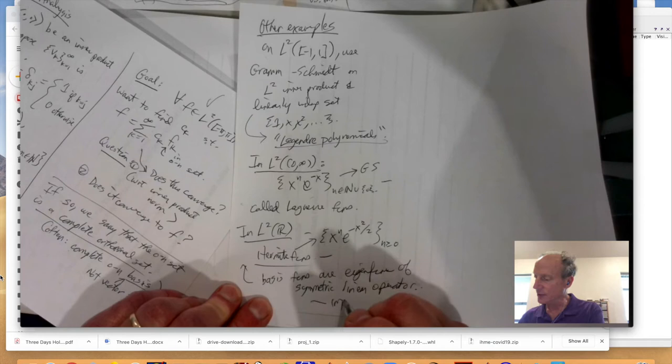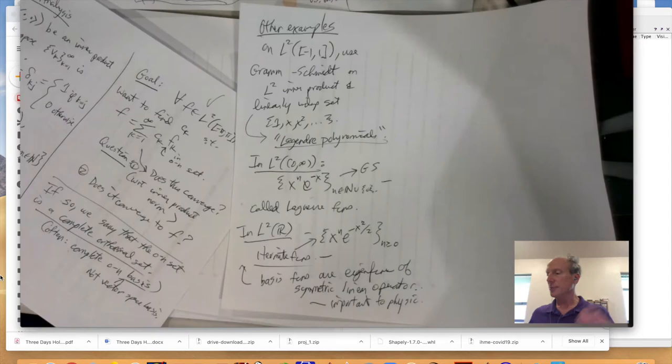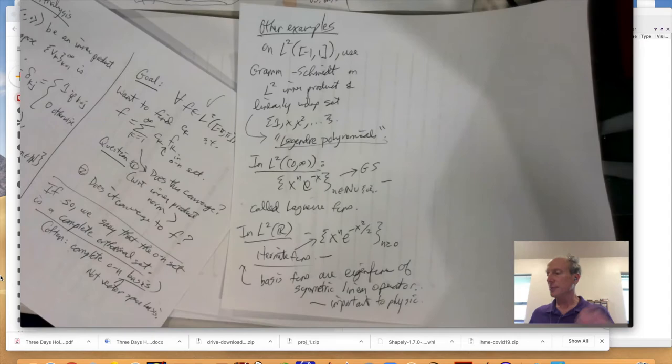That's one way of generating these orthogonal bases. And these are important to physics, particularly quantum physics. The eigenvalues are like the energy levels, and these are kind of cool stuff. So, anyway, so this subject is useful in a lot of places.